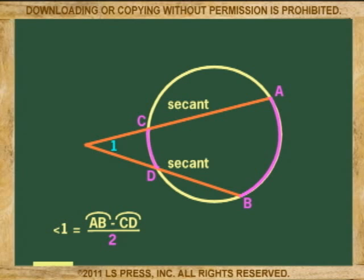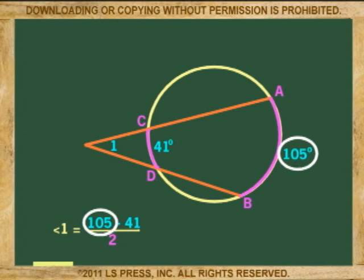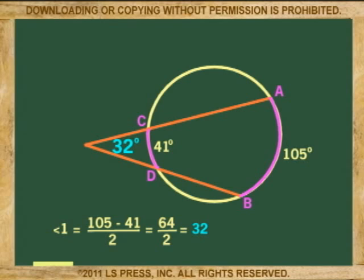For example, if arc AB is 105 and arc CD is 41, then angle one is 105 minus 41 or 64, and 64 divided by 2 is 32. Angle one is 32 degrees.